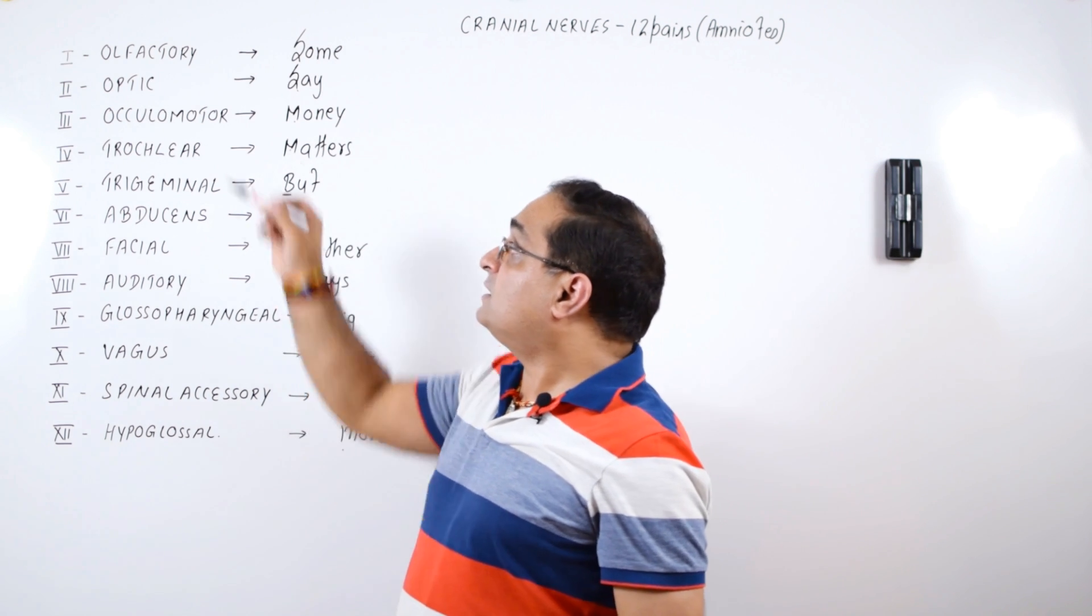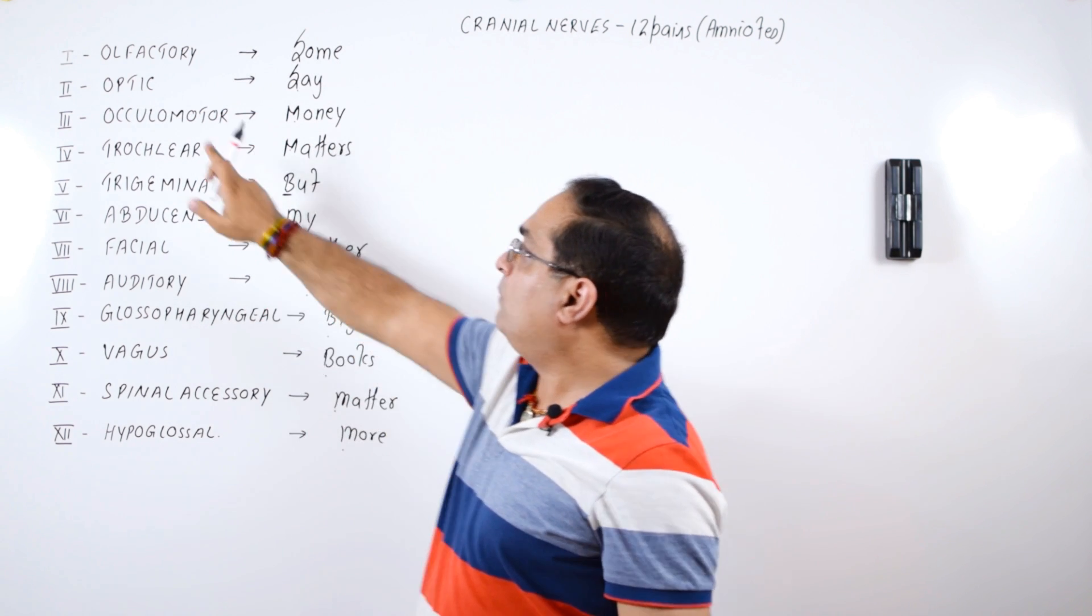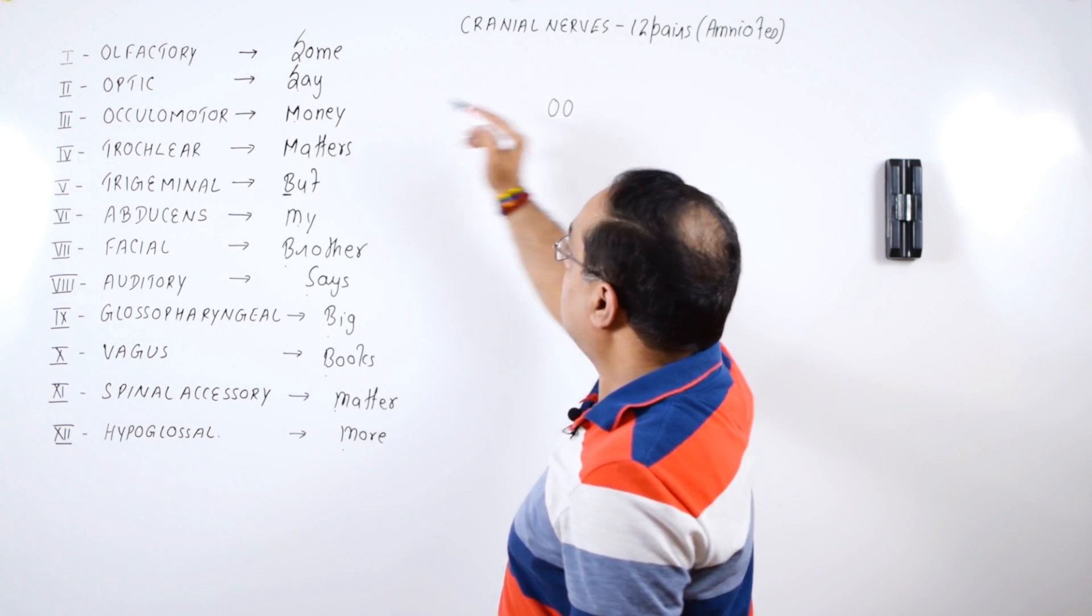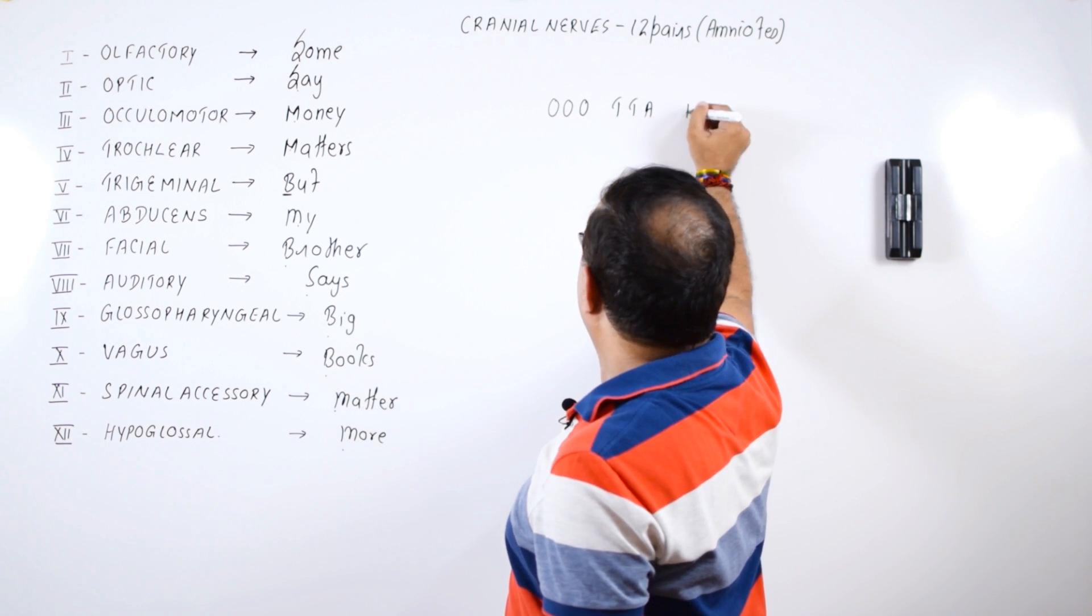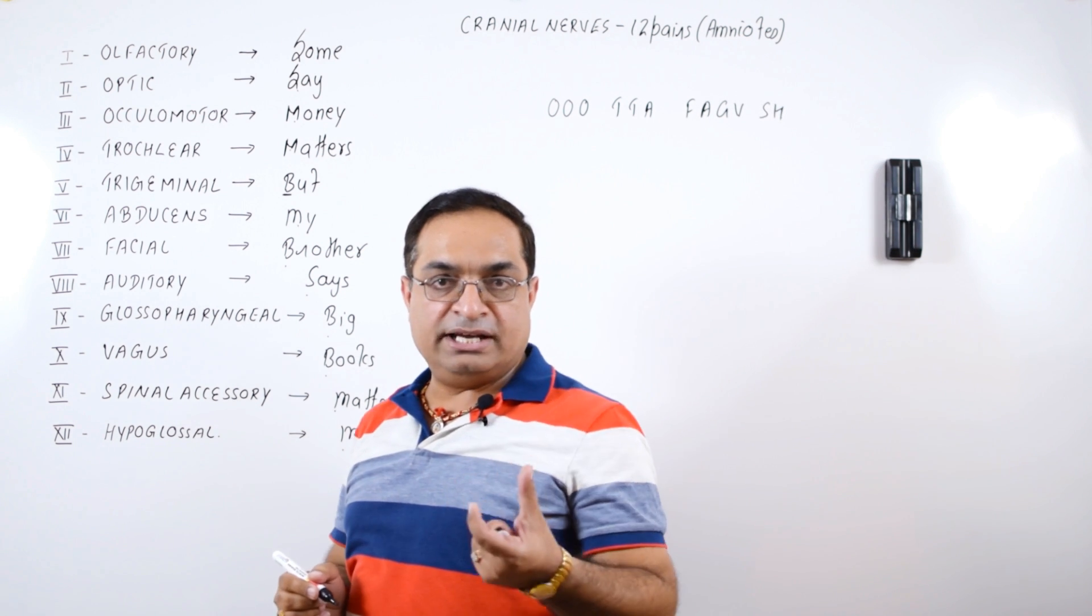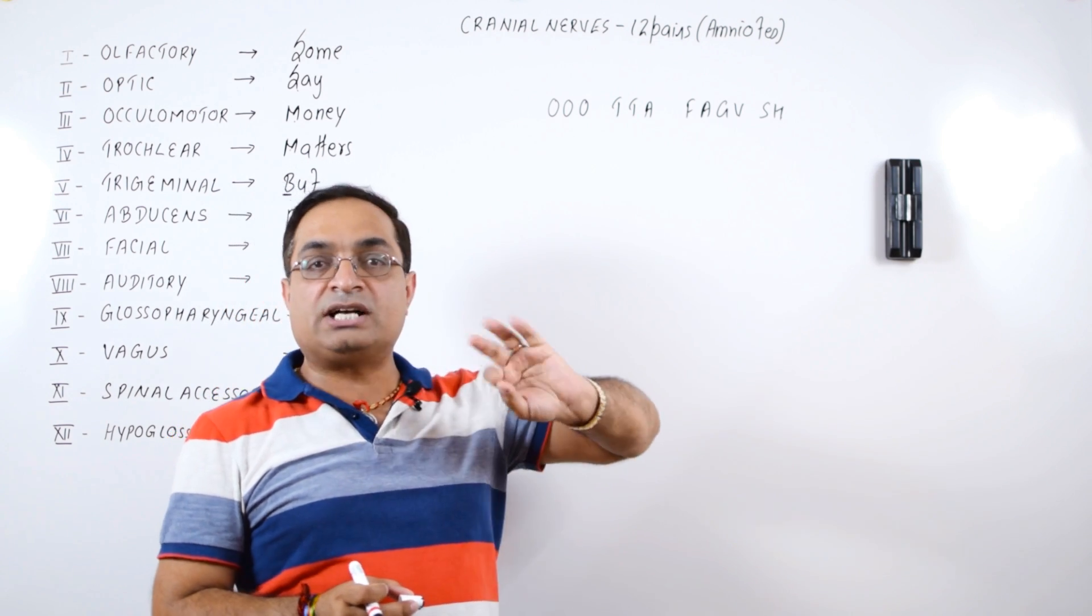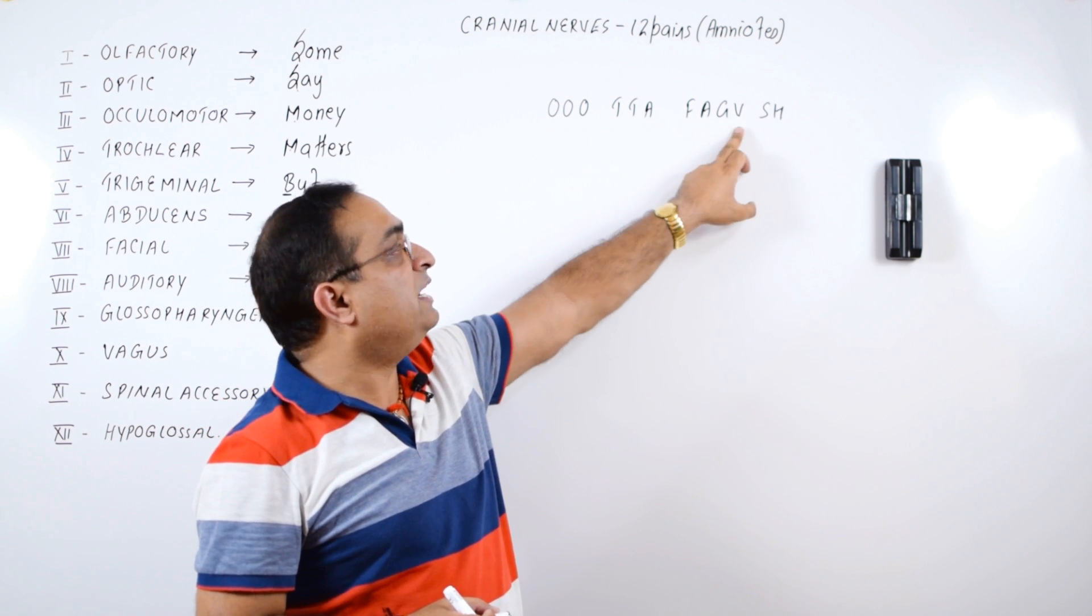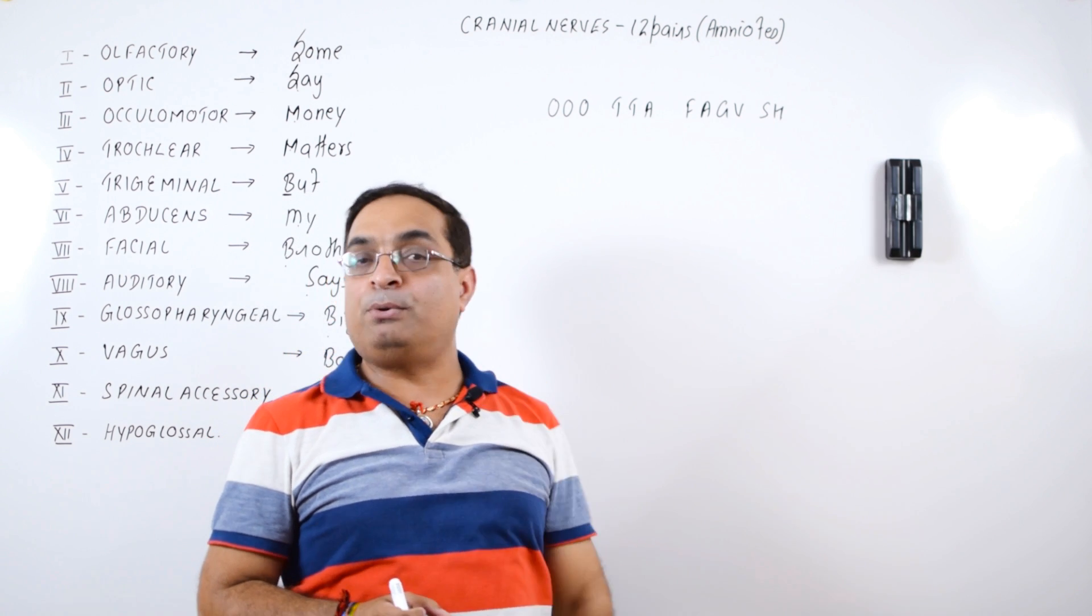Now another thing is how to remember the names of these cranial nerves. There is one simple way, we will just take the first alphabet and write it this way: OOOTAFAGVASH. We have broken it into small fragments, that's an easy way. So the first three cranial nerves, their name starts from O, so it is OOO, then TAFAGV: trochlear, trigeminal, abducens, facial, auditory, glossopharyngeal, vagus, spinal accessory and hypoglossal.